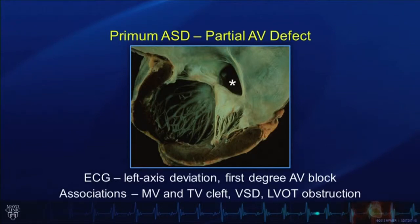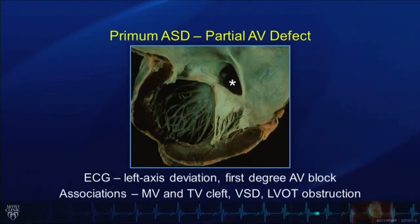We're looking here at the heart from the left side. Left atrium on the right side of the screen, left ventricle on the left side of the screen. An important finding demonstrated here is a cleft in the anterior mitral leaflet. Primum atrial septal defect and cleft mitral valve often go hand in hand. We also want to look for an abnormality of the tricuspid valve, because this defect is very close to the atrioventricular valves, where the AV valves are frequently abnormal.